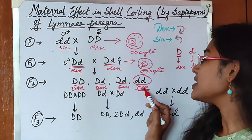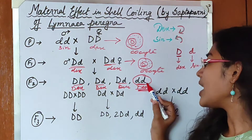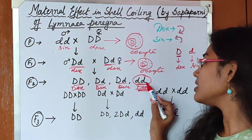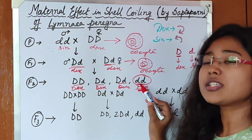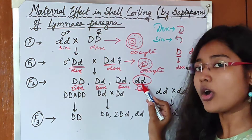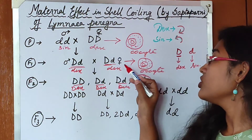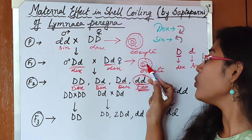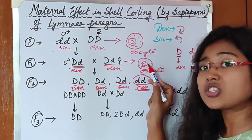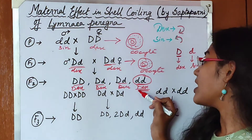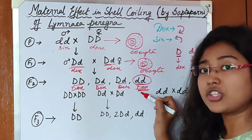This is the maternal effect. The small d small d genotype actually denotes a sinistral phenotype, but because its mother's genotype is capital D small d — which produces the protein for dextral coiling — it is becoming dextral, not sinistral. The phenotype of a progeny is getting determined by the genotype of its mother.